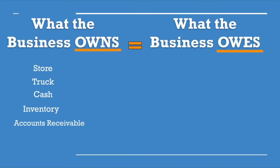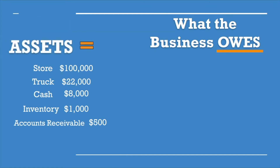Let's assign some values to this. The store is $100,000. The truck is $22,000. Cash you have $8,000. Inventory $1,000. Accounts receivable $500. This is what you own, or what we call assets, which totals $131,500.